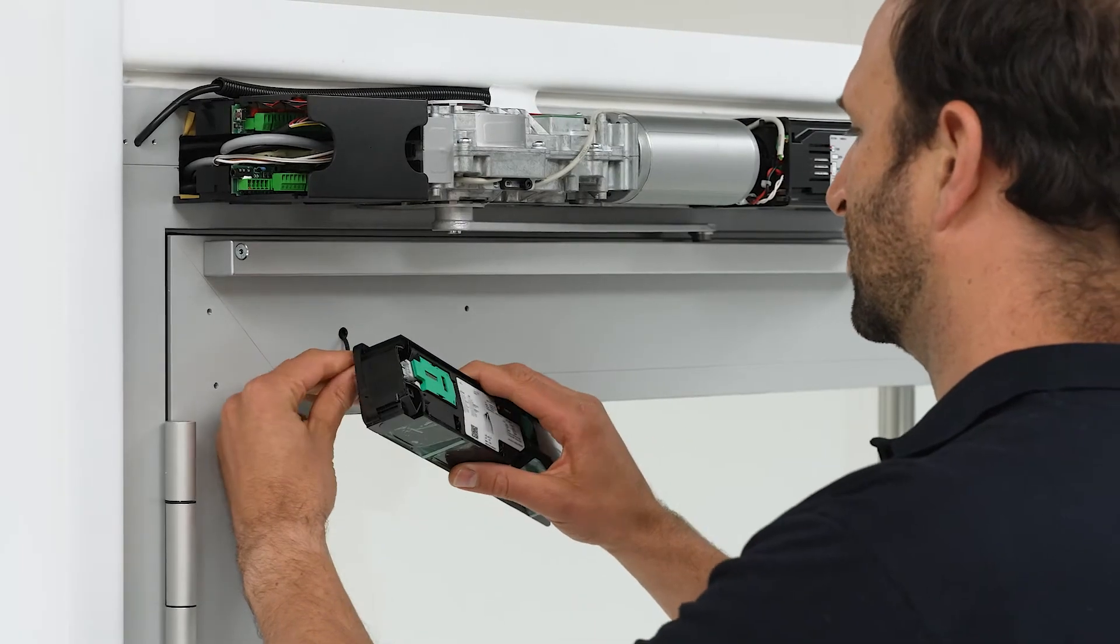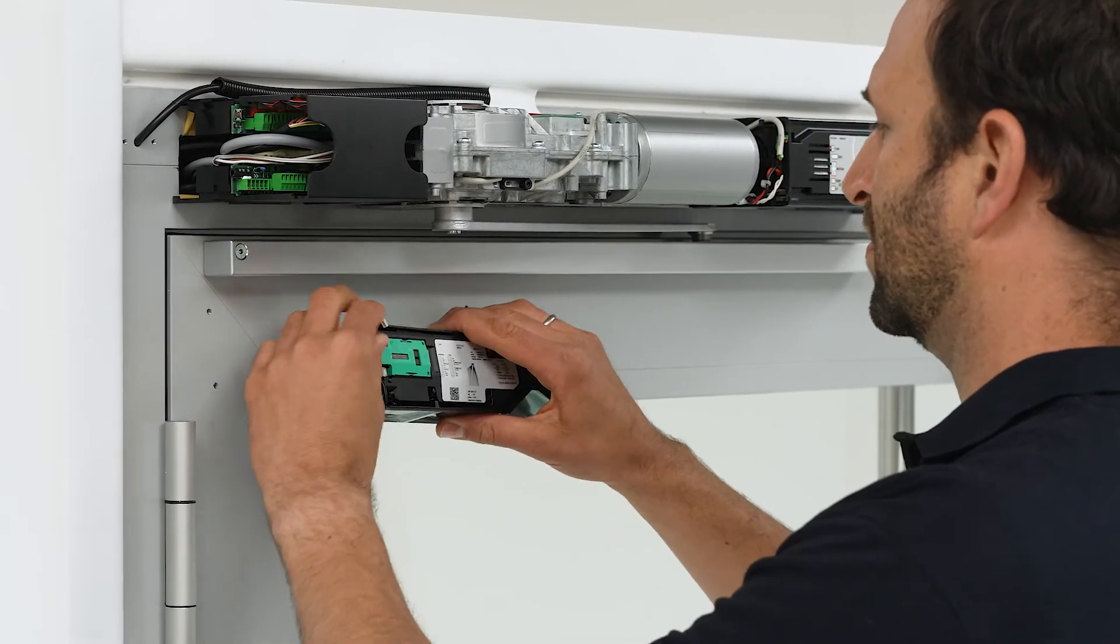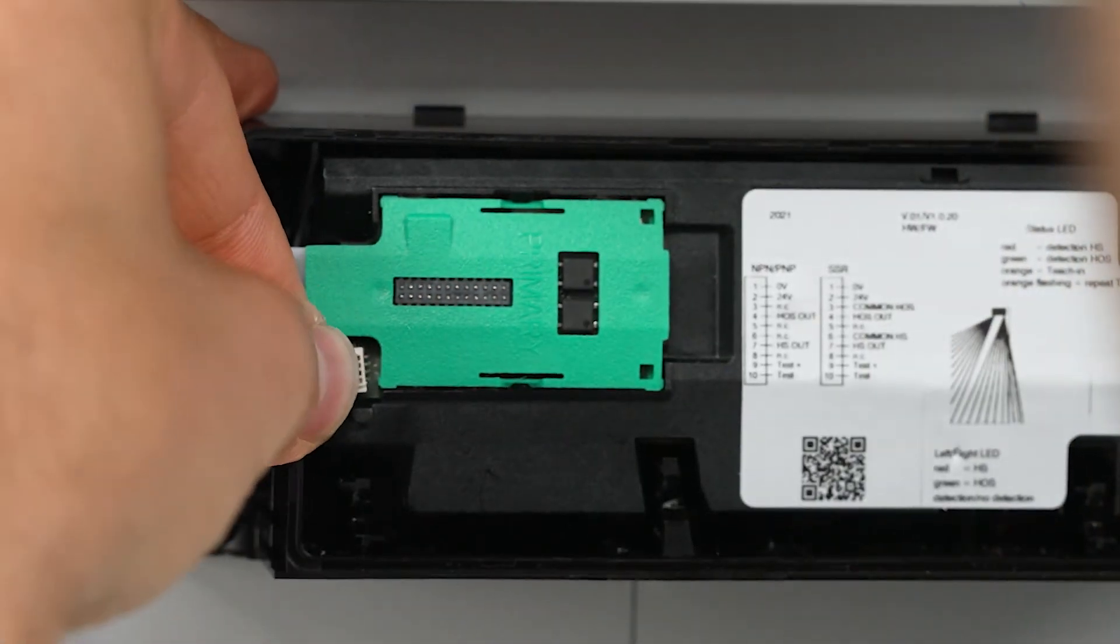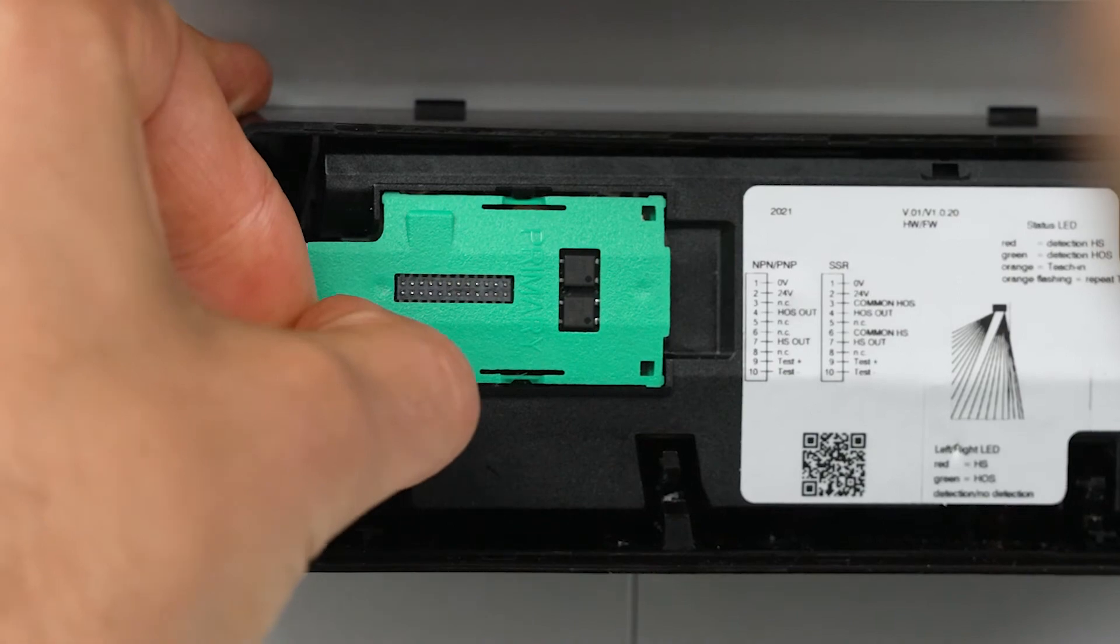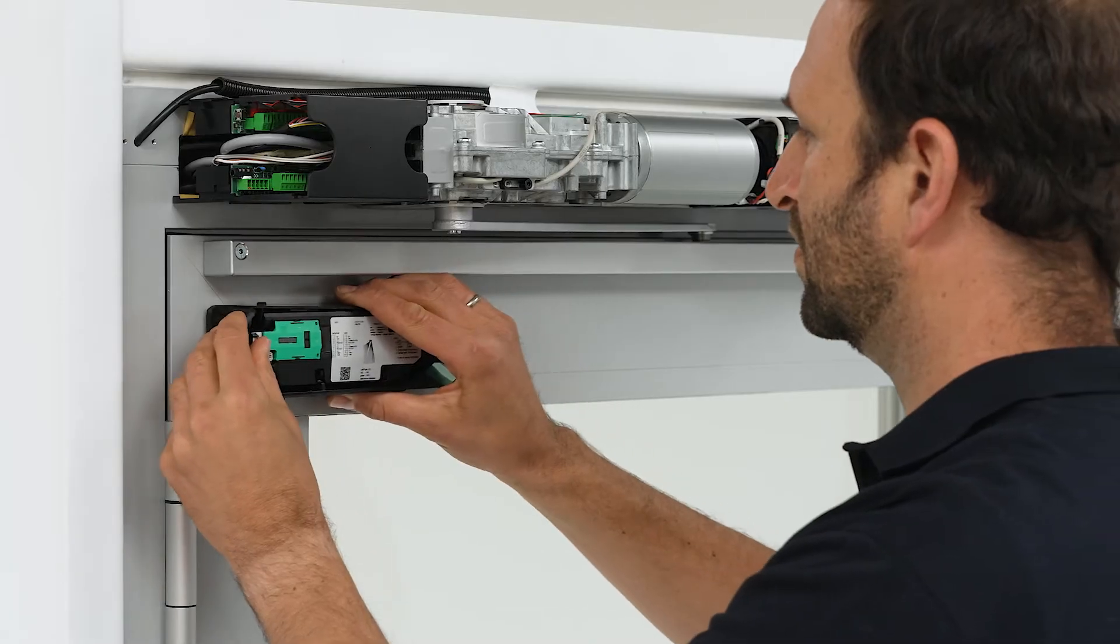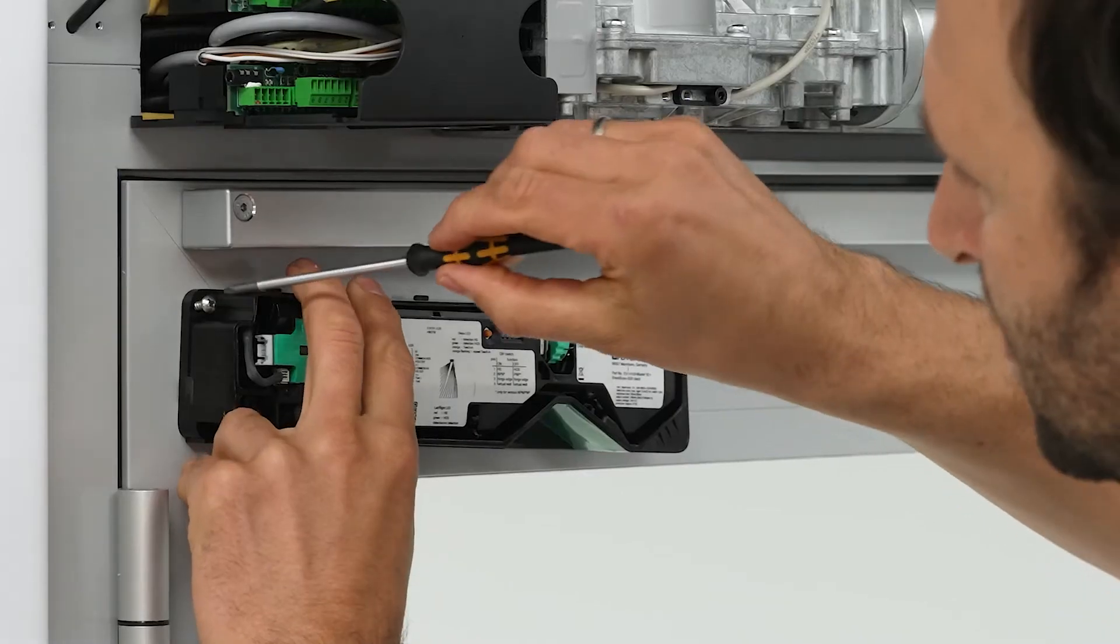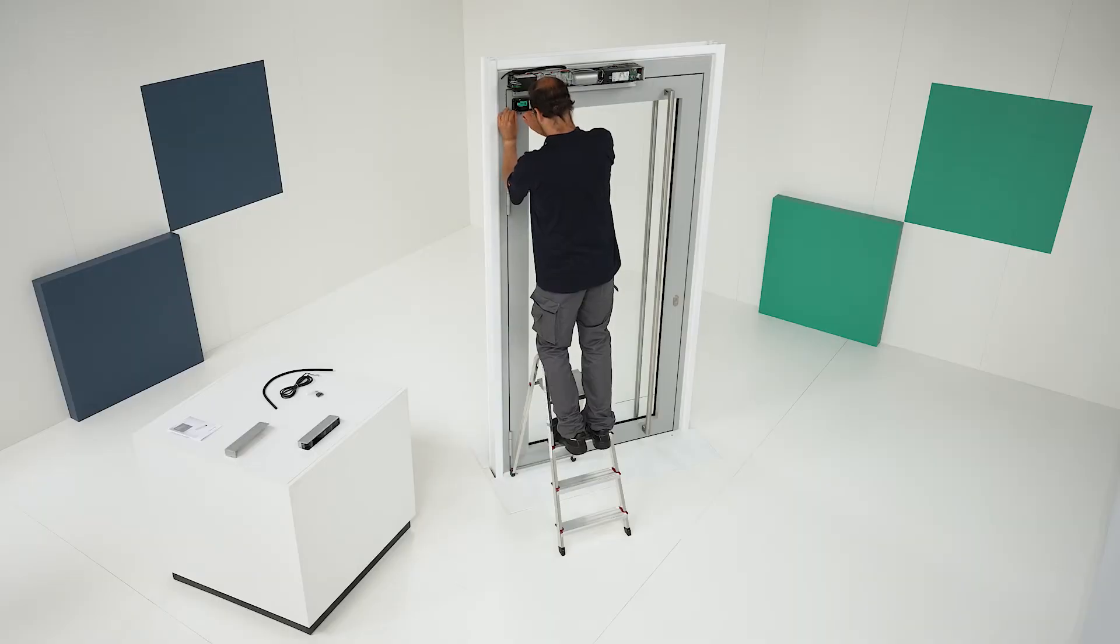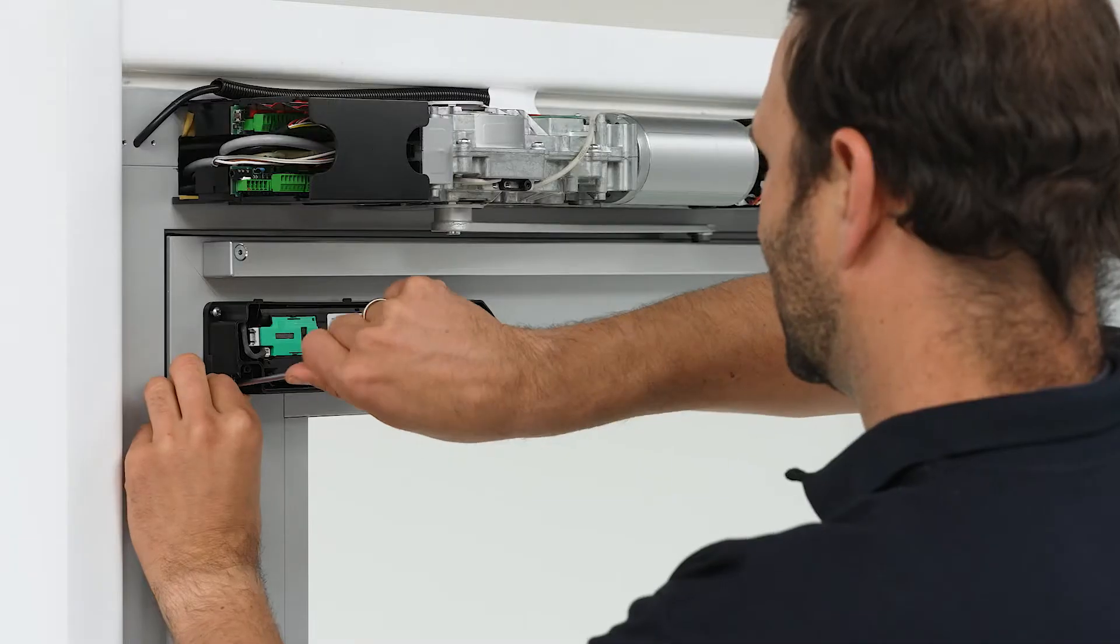Thread the door transition cable through the primary sensor. Leave approximately 50 mm of the cable hanging outside of the housing and plug the connector into the relevant socket. Then pull the rest of the cable through to the secondary sensor. Use a cross-head screwdriver and the supplied screws to secure the primary module in place. A third screw can also be used for added stability.